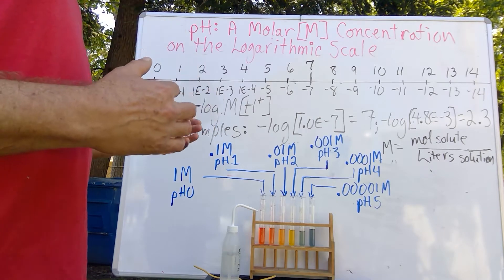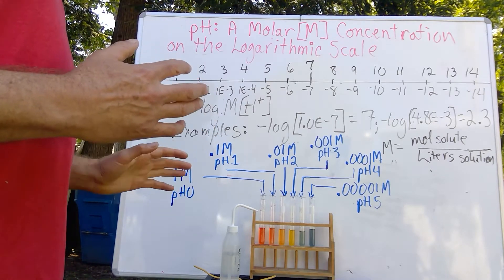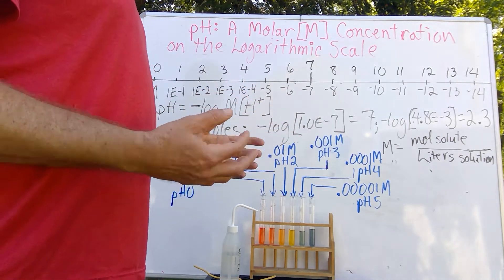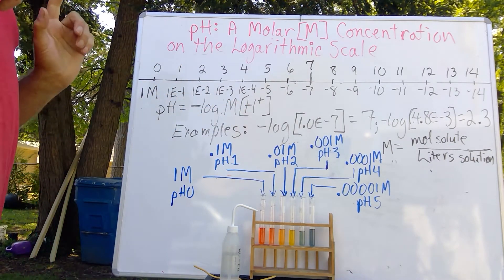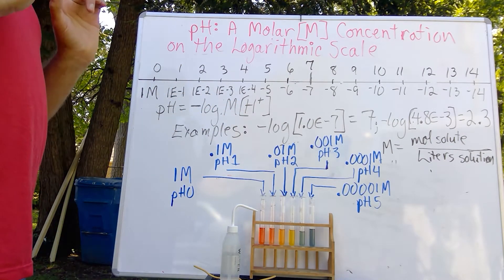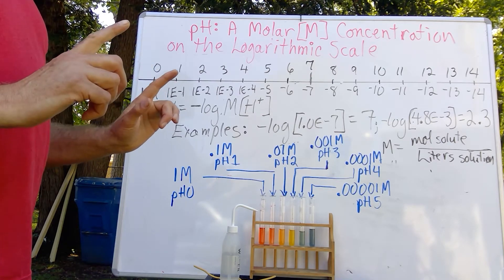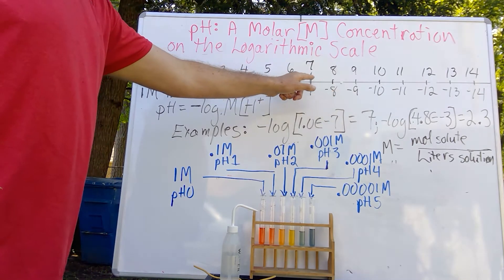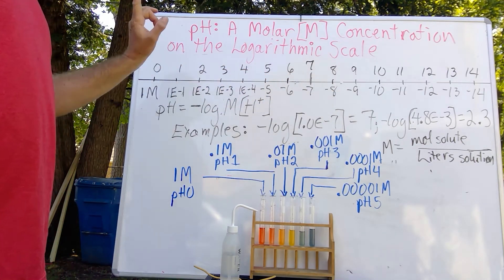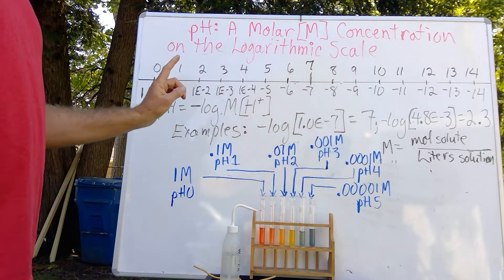That means we assume that all of our nitric acid will dissociate into hydrogen molecules. And so, as we increase the strength of this acid by a factor of 10, the pH number goes down.